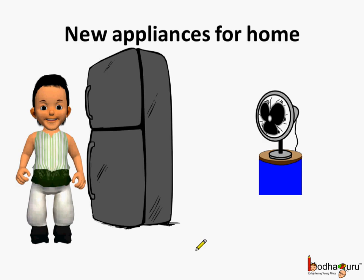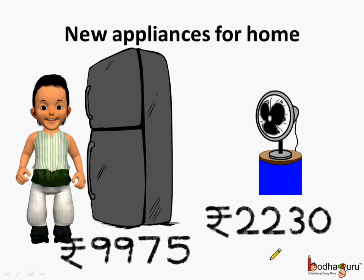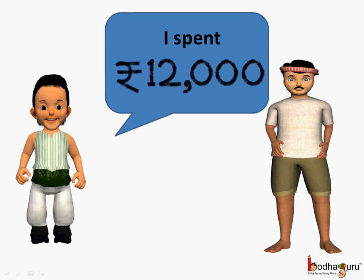Let us see the usage of rounding off numbers in number operations. This is Bola and he bought new appliances for his home. He bought a new refrigerator for 9,975 rupees and also a table fan costing 2,230 rupees. His friend Raju asked him, 'How much did you spend on the table fan and the refrigerator?' To which Bola replied, 'I spent rupees 12,000.' Let us add the two values and figure out whether Bola was giving the correct reply.